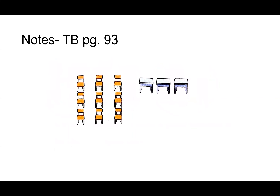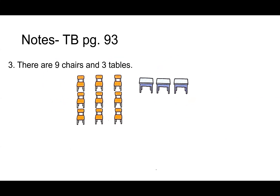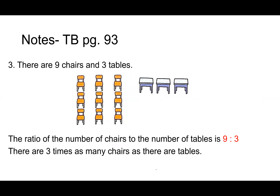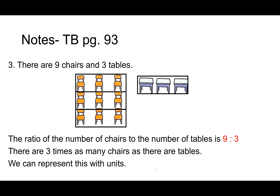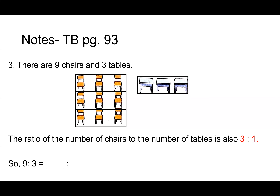There are nine chairs and three tables. The ratio of the number of chairs to the number of tables — Isaac? Nine to three. There are three times as many chairs as tables. We can represent this with units of three. I have three units of chairs and one unit of tables, so the ratio is three to one. Nine to three equals three to one.